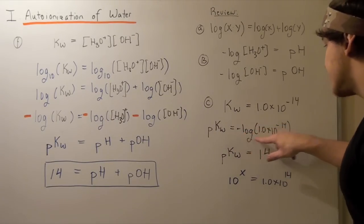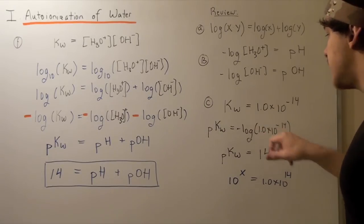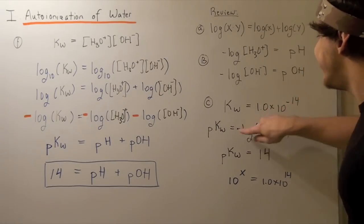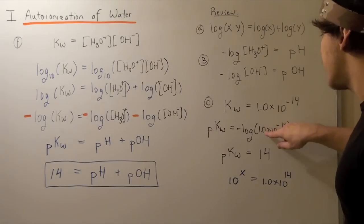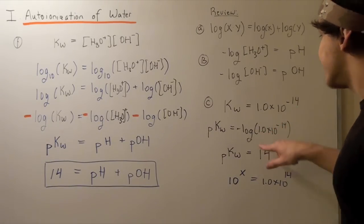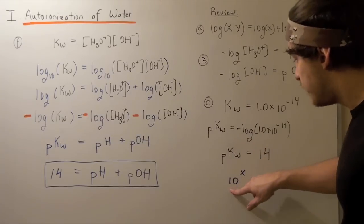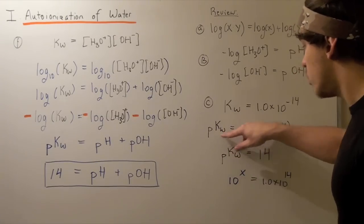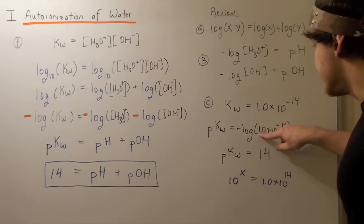I could either plug this into the calculator or solve it in my head. Since we have a negative here and a negative here, negatives cancel, so we simply have 1 times 10 to the 14th. Since our base is 10, I'll write a base 10. Since our exponent is what we don't know, we leave that blank. Since this is our result, we plug this into the result.